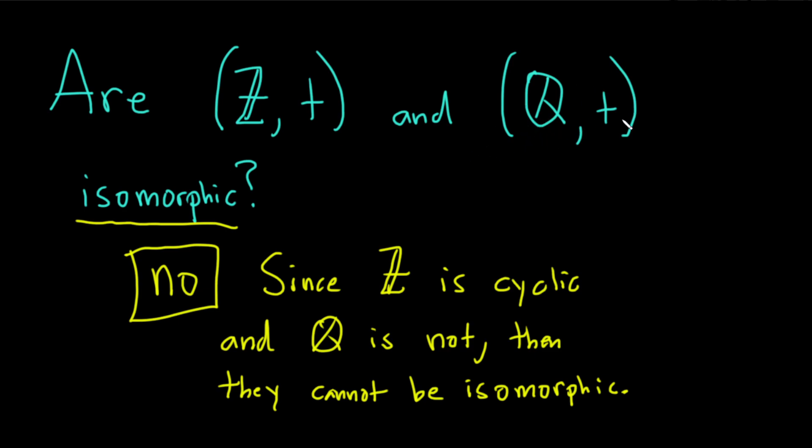So the group ℚ under addition is not a cyclic group. So these groups cannot be isomorphic, because if they were, again, you would have a contradiction, right?